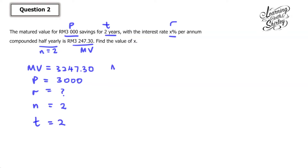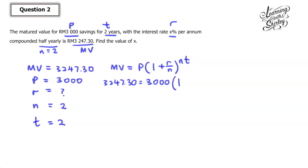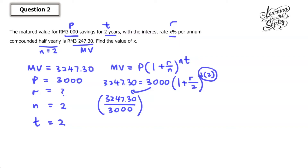Next, we write down the formula: MV equals P bracket 1 plus R over N, to the power of NT. So 3,247.30 equals 3,000 times bracket 1 plus R over 2, to the power of 2 times 2 — that's power 4. Moving 3,000 to the left-hand side, it becomes divide: 3,247.30 divided by 3,000. The power 4 shifts to the left and becomes 1 over 4. So the result equals 1 plus R over 2.